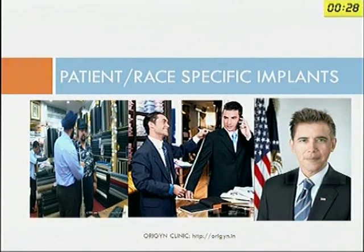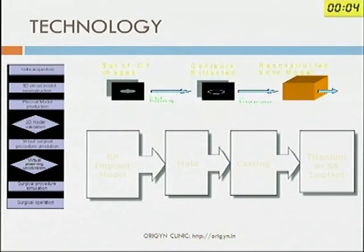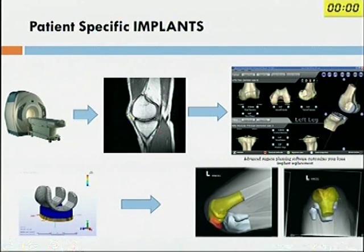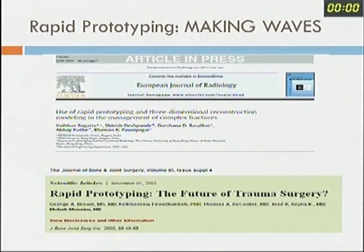Another important category is patient-specific or race-specific implants. We've heard about patient-specific instrumentation, but this is a new genre of implant design being touted as the next big thing. Studies have shown race differences in knee anthropometry. This new technology takes the patient's own MRI data and designs patient-specific implants — not just instrumentation, but implants that fit and replace only the damaged part of the knee joint. Most of these are still in experimental stages, though their use is increasing in certain centers. This technology uses rapid prototyping techniques already making news in trauma surgery.